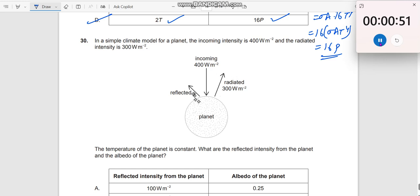Radiated intensity is 300. What is reflected? It is not given here, but you can understand. 400 is incoming, 300 outgoing. There should also be 100. 100 plus 300 should be 400.